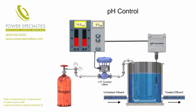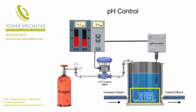If the values are not equal, the controller sends a signal to the control valve that applies carbon dioxide to the tank. The reagent is applied to the tank at varying rates to precisely control the pH level.